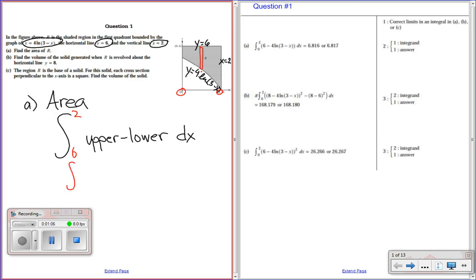And then we're going to go upper minus lower. So, the upper is 6. The lower function is 4 times natural log of 3 minus x. Then you just plug this into your calculator because it's a calculator question. Remember, when you get your answer, round it to three decimal places always. So, either 6.186 or 6.817. Sorry, I think I mixed up my digits there.